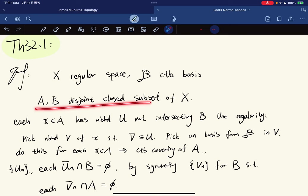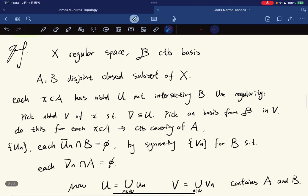We're given two disjoint closed subsets A and B. Now for each point in A, we have a neighborhood that does not intersect B because we're given that it's regular. So we use the regularity. Remember we have a lemma that we can pick a neighborhood V of x such that the closure is contained in U.